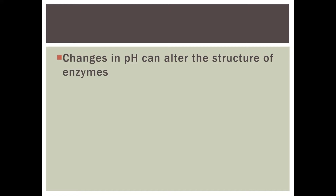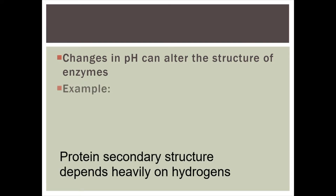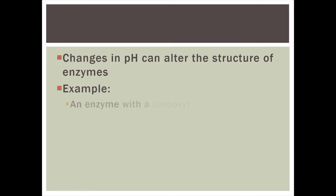Now, pH can actually alter the structure of these enzymes. For example, if you take an enzyme with a carboxyl group — the COOH group we discussed in Chem 11 — that's a carboxyl group.